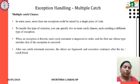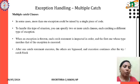Multiple catch clauses: in some cases more than one exception could be raised by a single piece of code. To handle this situation you can specify two or more catch clauses, each catching a different type of exception. When an exception is thrown, each catch statement is inspected in order and the first one whose type matches the exception is executed. After one catch statement is executed, the others are bypassed and execution continues after the try-catch block.